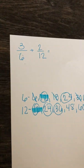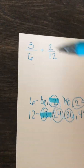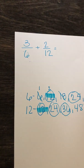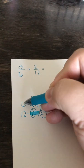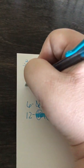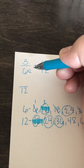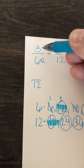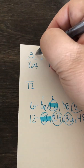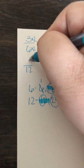So we go up here, and if we're going to make this 6 a 12, how many times did we have to skip count? We had to skip count: 1, 2. So 6 times 2 would be 12. Now what's really cool — whatever we do to the denominator, we have to do to the numerator. So if we times the denominator by 2, we have to times the numerator by 2. So 3 times 2 is 6.